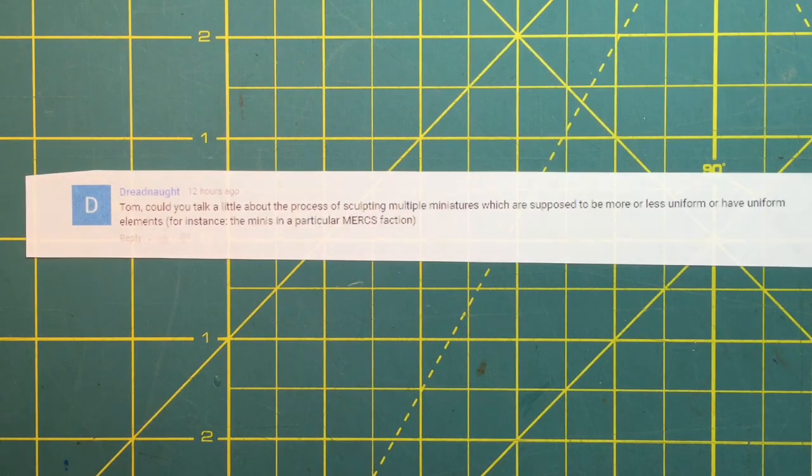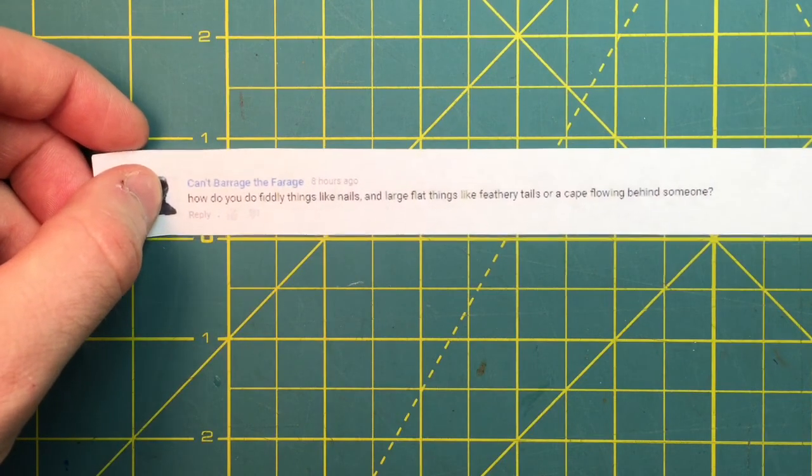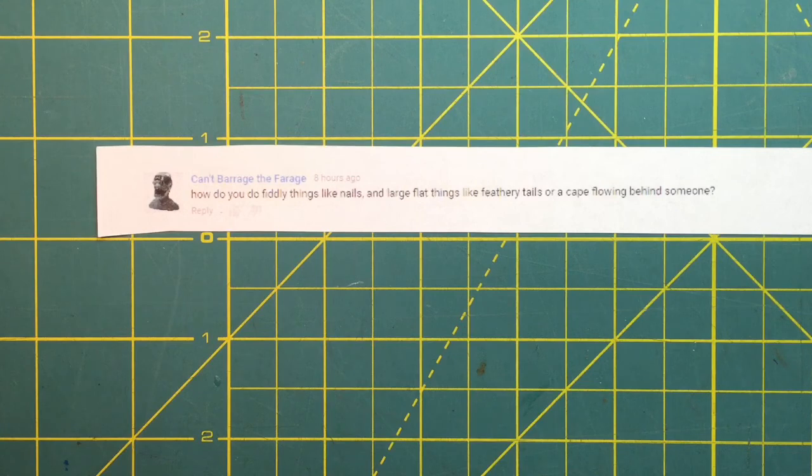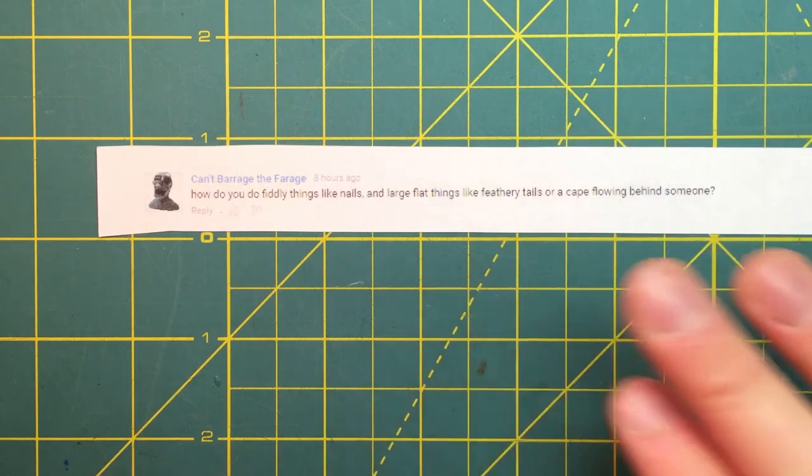Our last question is from Cam Barrage or Farage again: How do you do fiddly things like nails and large flat things like feathery tails or a cape flowing behind someone? Well, those are a lot of different things. I'll answer them quickly just to get it out, and then maybe I'll probably have to do some tutorials on these to really get into it. Nails are done with small tools - small sharp tools like a scalpel or X-acto blade and maybe a needle. You just basically cut in the shape. If you want it to be something longer, maybe like a claw, then you can actually use a putty element and form that rather than just cutting it in. But if it's going to be a regular fingernail, you can usually just cut it in. But I usually don't worry about it on 28 to 35 millimeter miniatures - I usually want to reserve that for bigger stuff.